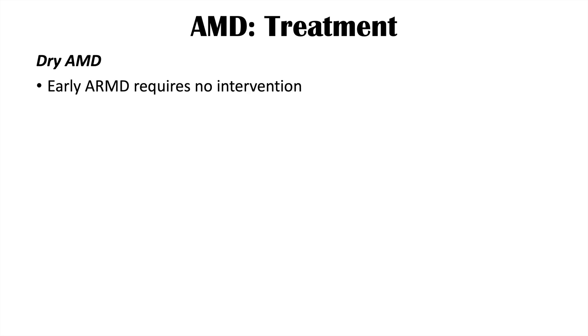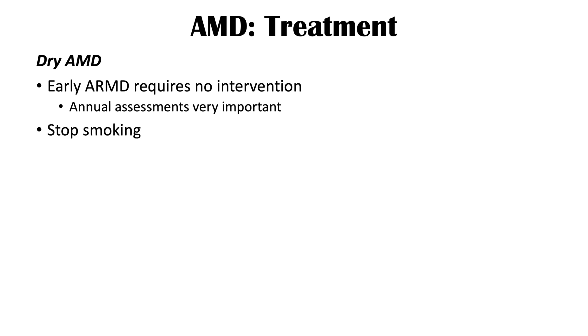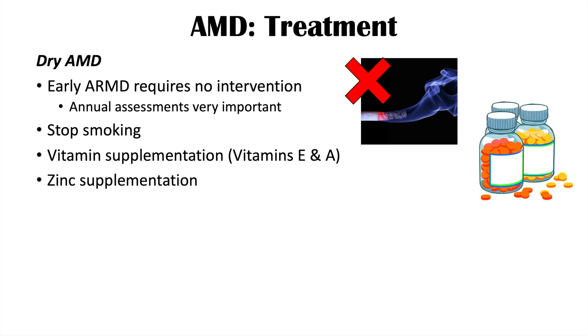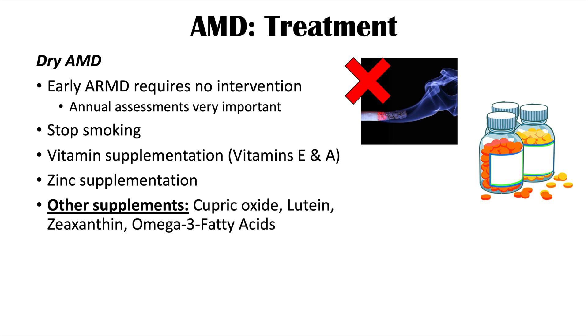Treatment for dry AMD includes no intervention for early stages but with annual assessments. Lifestyle modifications such as stopping smoking and limiting alcohol are important. As the condition progresses, vitamin supplementation with vitamins E and A, zinc, cupric oxide, lutein, zeaxanthin, and omega-3 fatty acids have all been shown to reduce progression. In some cases, thermal laser photocoagulation surgery may also be utilized.